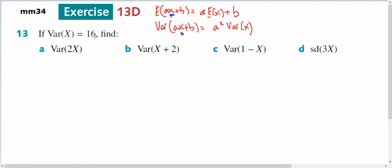So the variance of x is 16, then the variance of 2x squared is going to equal 2 squared times the variance of x, which is 4 times 16, which is going to be 64.